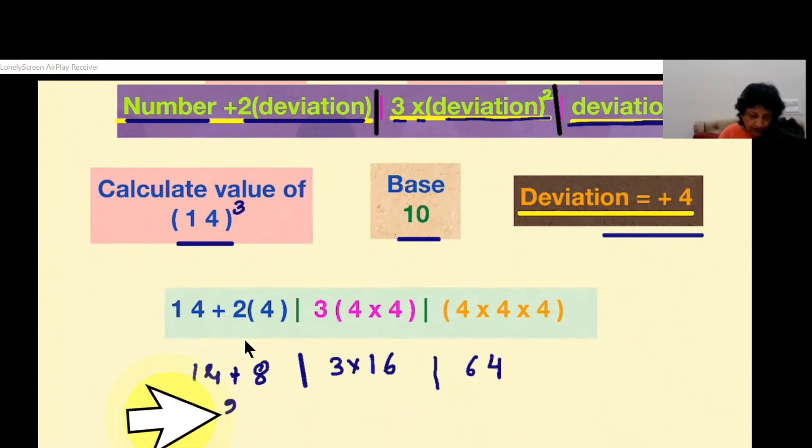Now when we add this we get 22 over here, and when we multiply this we get 48 over here, and we have 64 over here. Now because the base is 10 and 10 has only one zero, we have to keep only one single digit in one section.